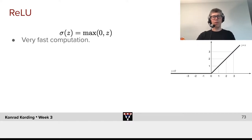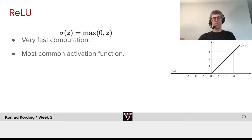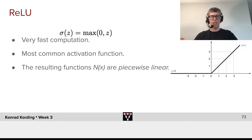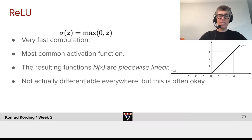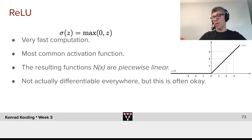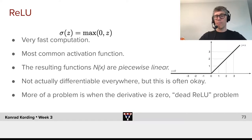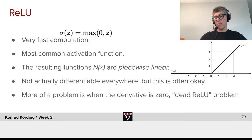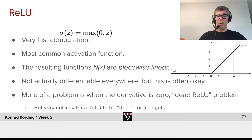Here we have ReLU. The big advantage is it's very fast to compute. It's the most commonly used function. The resulting functions are piecewise linear, as we saw. It's not actually differentiable everywhere — namely not at 0 — but this is often okay. It's more of a problem when the derivative is 0, where we have the dead ReLU problem. But it's pretty unlikely for a ReLU to be dead for all outputs.